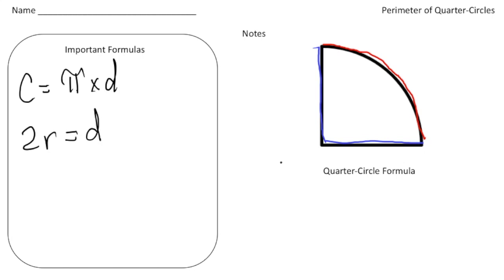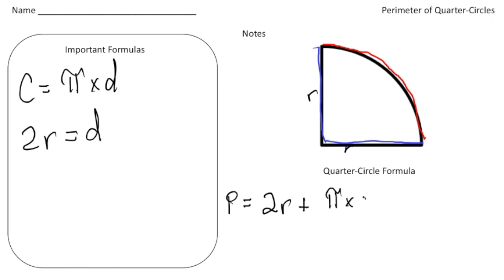So let's come up with our own formula to find the perimeter of a quarter circle. We need to add up the two radiuses, so radius plus radius is twice the radius. But we also need to add the distance of the red arc part, which is a quarter of the circumference — so it's pi times the diameter divided by four, because this is one-fourth of the circumference.